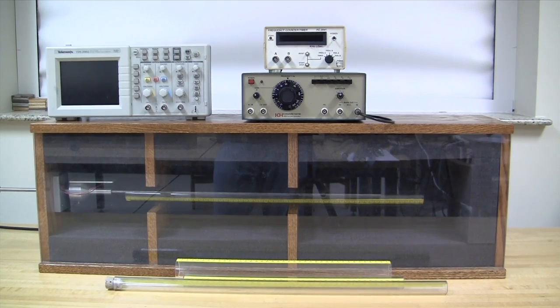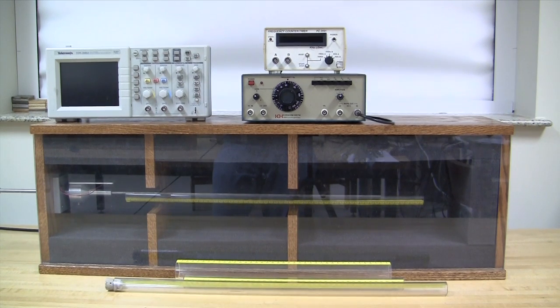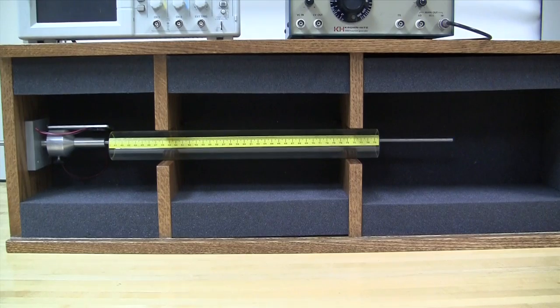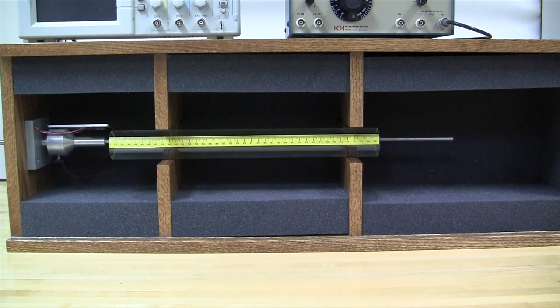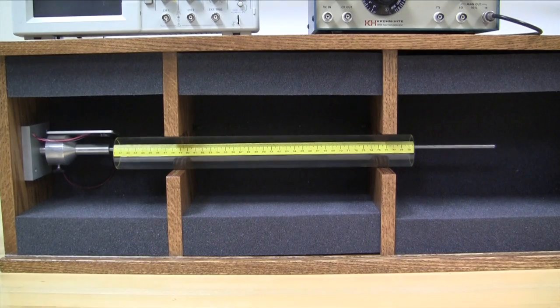The setup of this lab consists of a wooden sound box which is padded with foam on the sides to reduce the interference from outside. In this box, you can place the graduated pipe and measure the pressure variations inside the pipe using a mic. The mic can be moved along the length of the pipe.